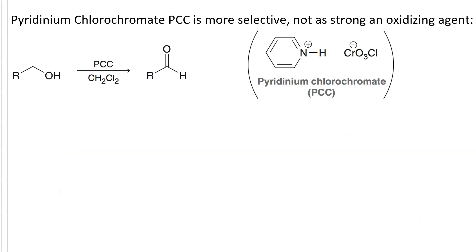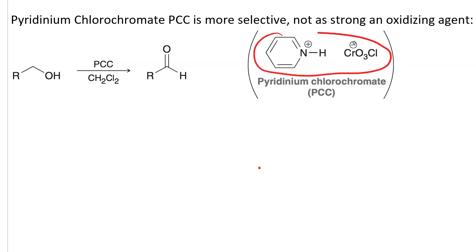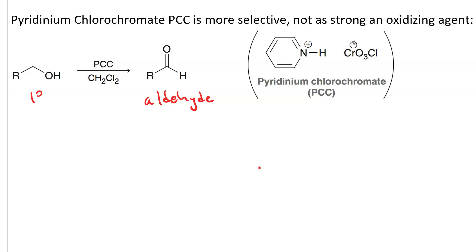The more selective reagent is pyridinium chlorochromate (PCC) in dichloromethane. The chlorochromate ion is chromium trioxide (chromium(VI) oxide) with a chloride ion added — giving one chromium(VI) ion, three oxide ions, and a chloride ion, with a net charge of minus one. PCC is the combination of pyridinium and this chlorochromate ion. PCC will take you from a primary alcohol to an aldehyde, but it will not go further — it will not make a carboxylic acid.